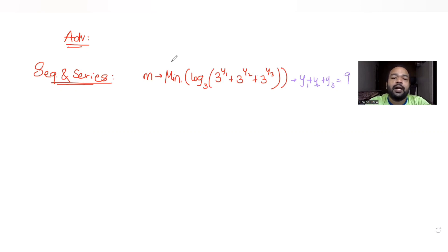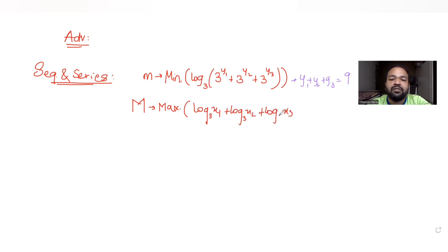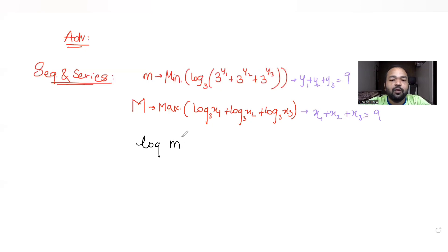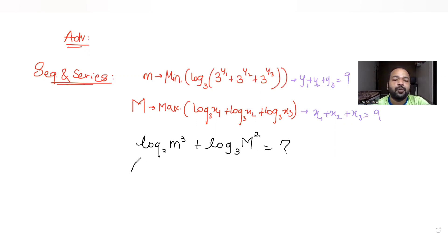We are also given that capital M is the maximum possible value of log x1 to the base 3 plus log x2 to the base 3 plus log x3 to the base 3, where x1, x2, x3 are real numbers with their sum given. We need to find the value of log(m³) to base 2 plus log(M²) to base 3.